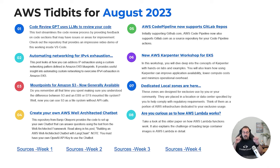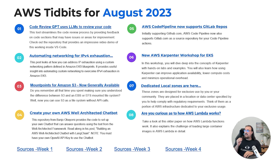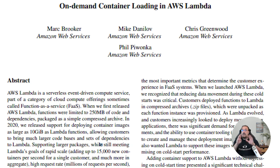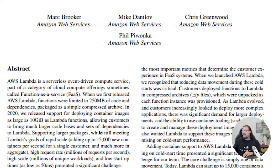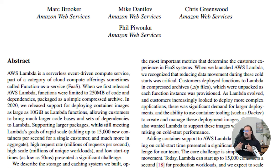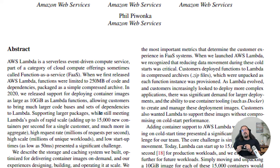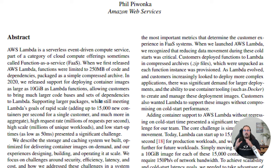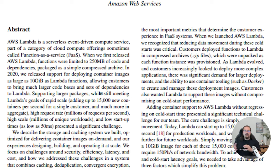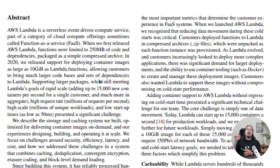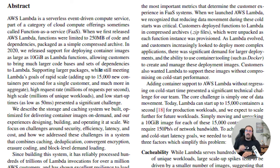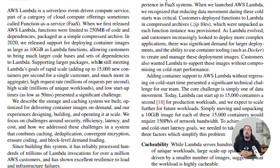Last but not least: Lambda has been around since 2014, and number eight this week is an older paper about how Lambda functions work and how Lambda deals with containerization at scale — particularly the challenge of loading large container images into Lambda. Understanding how things work behind the scenes allows you to architect better, so understanding the internals of AWS Lambda can only help you.